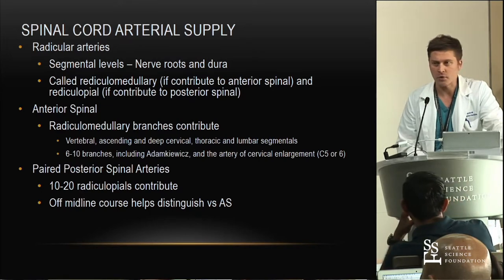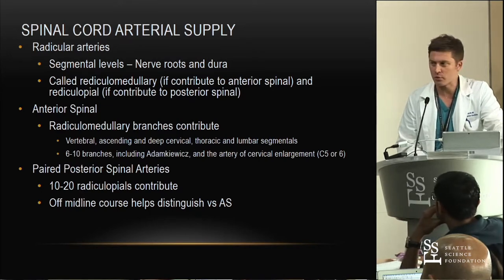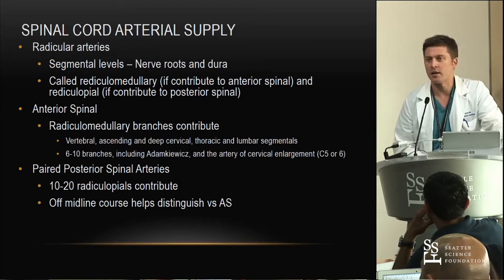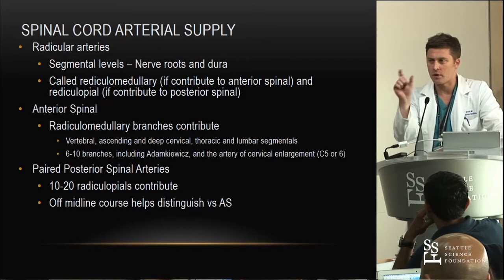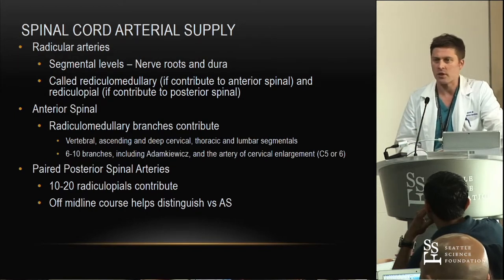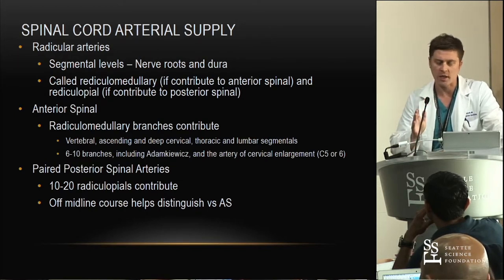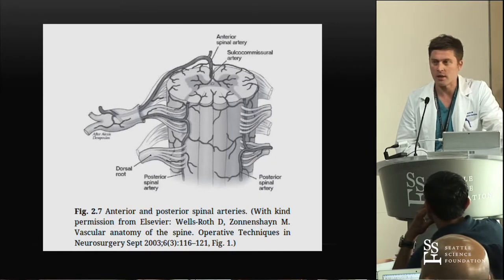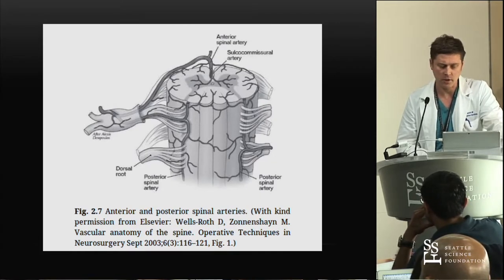The paired posterior spinal arteries number 10 to 20 and are off the midline. On the angiogram, we can tell the anterior spinal artery because it's right in the middle, and the posterior spinals are off to the side. As long as you get your x-ray completely lined up when shooting the angiogram, you can tell which is which — that's important for embolization. Here's a cartoon showing the anterior spinal and then the paired posterior spinals on the back.